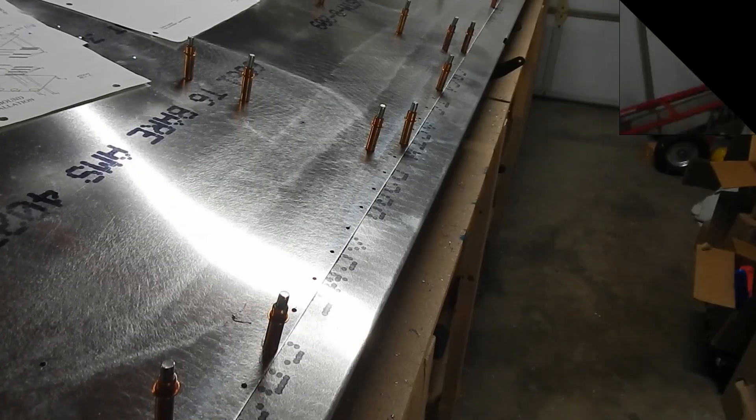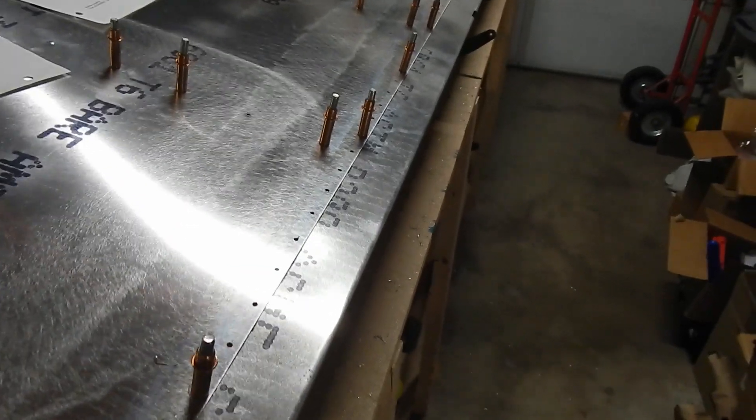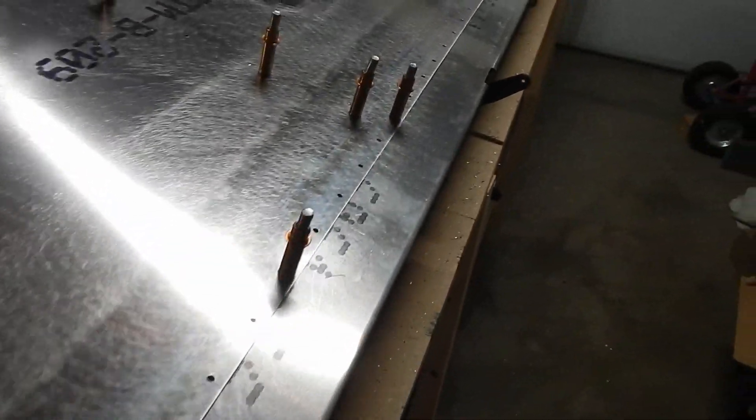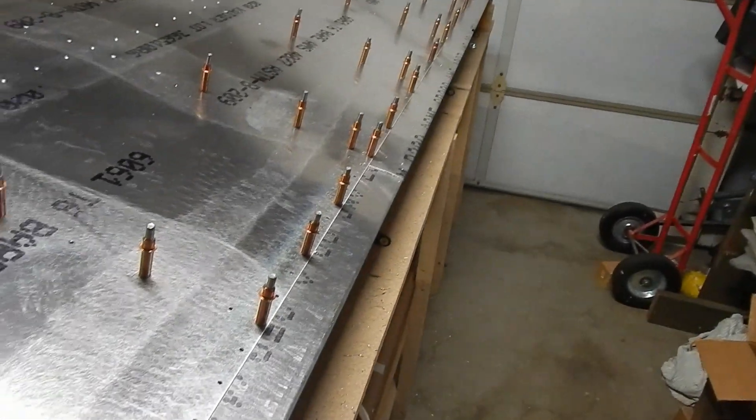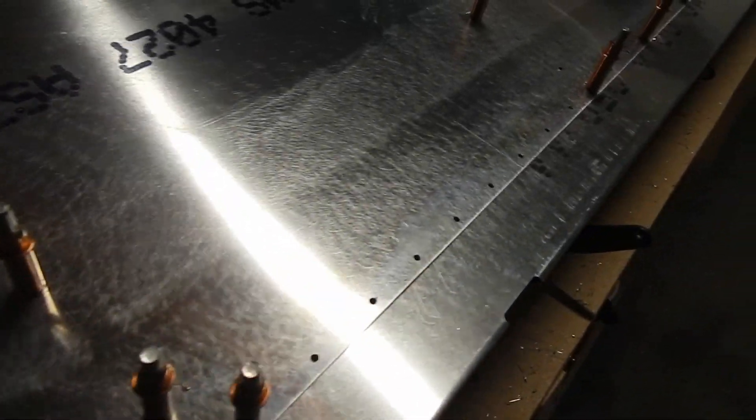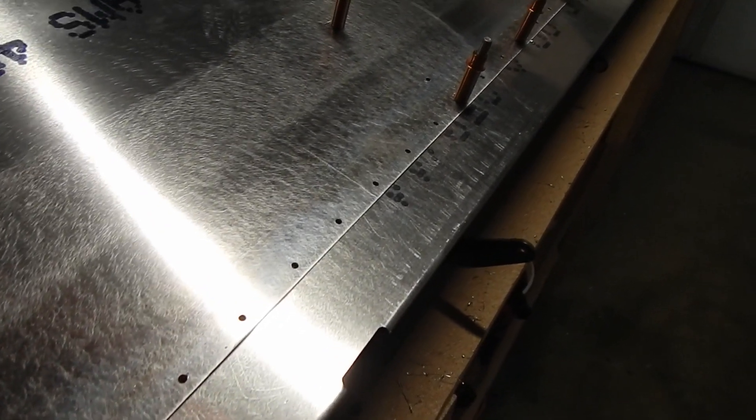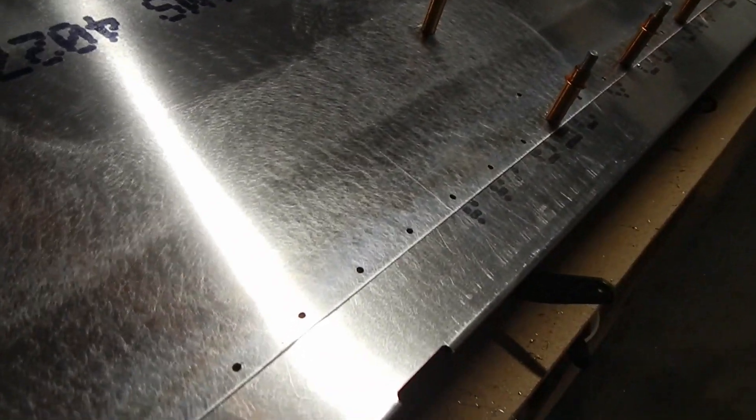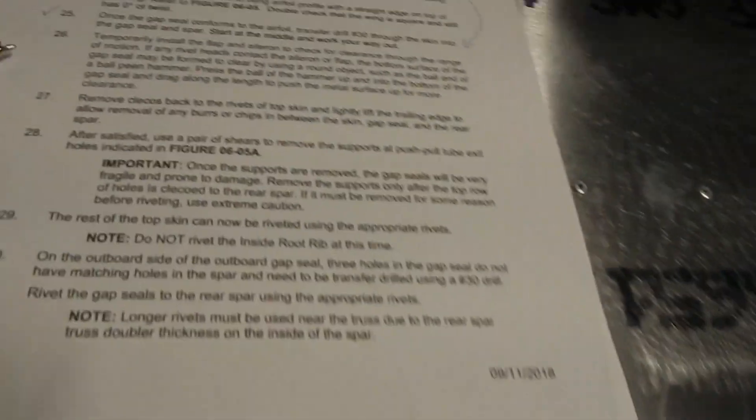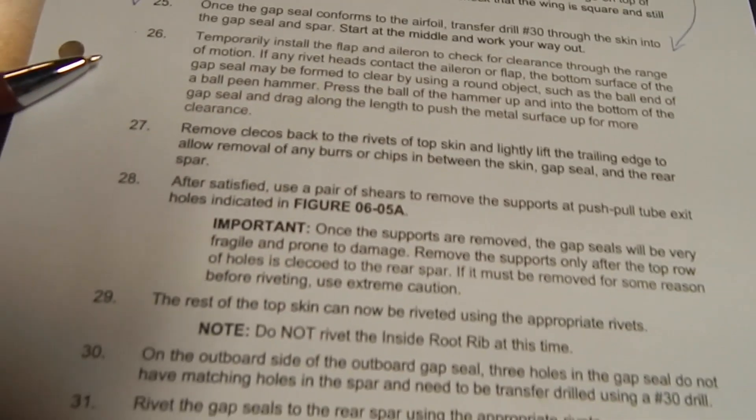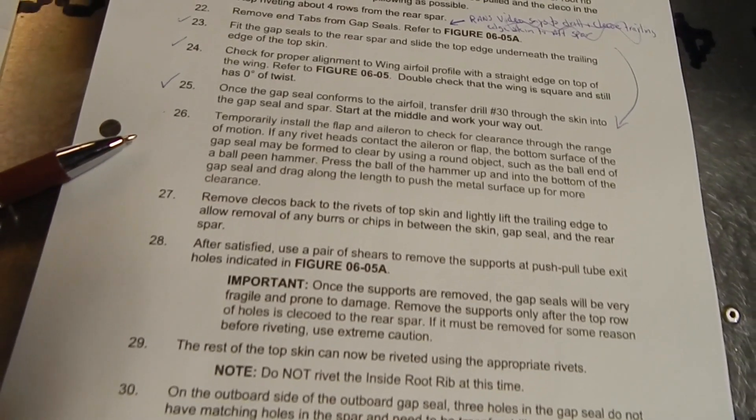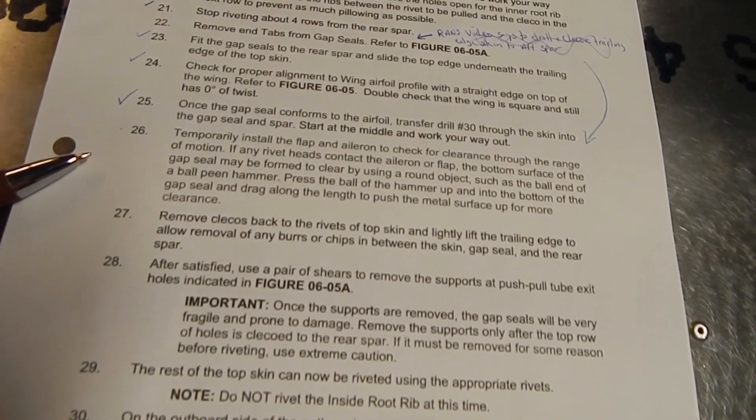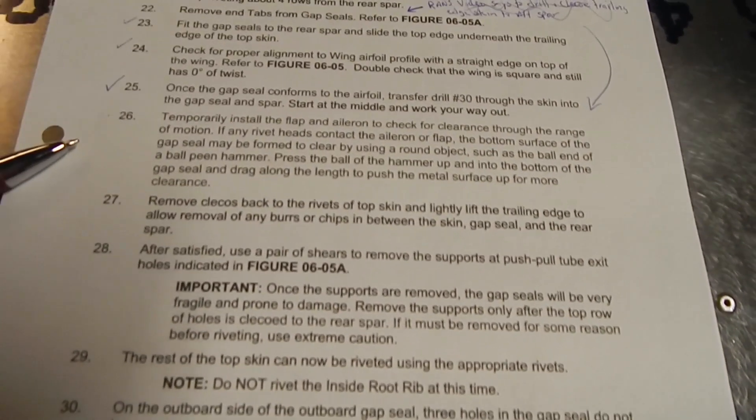I have transfer drilled the gap seal with a number 30 all the way down the rear spar. A little change in plans: I was not gonna finish this wing and I was gonna start working on the second wing. I'm waiting for some internal parts to put the bottom skin on. But even before I put the wing away, the next step, number 26, is to temporarily install the flap and aileron to check for clearance.